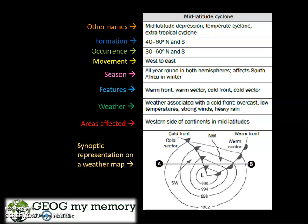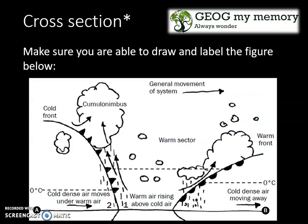In front of you is a synoptic representation of a mid-latitude cyclone on a weather map. Make sure that you are able to draw and label the figure. This is the cross-section of a mid-latitude cyclone.